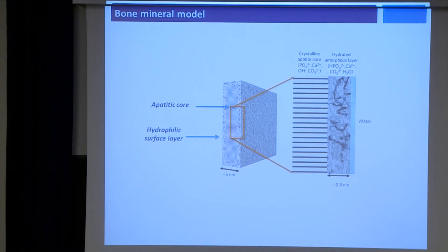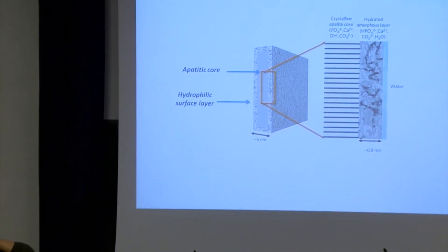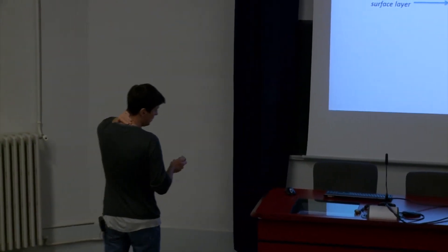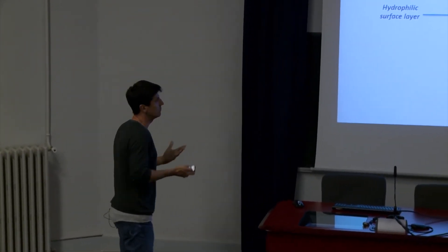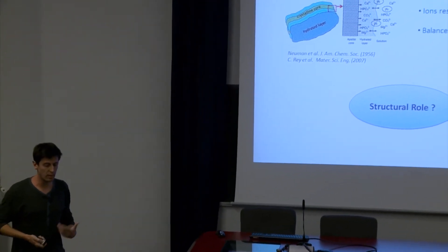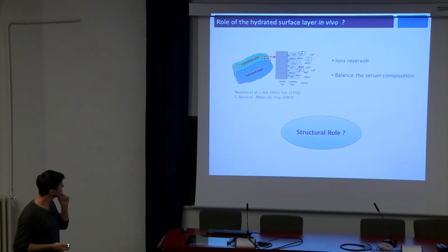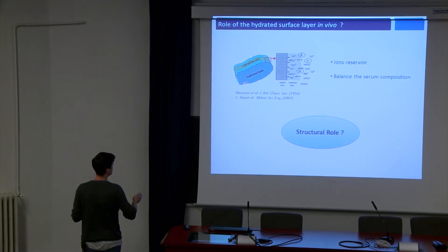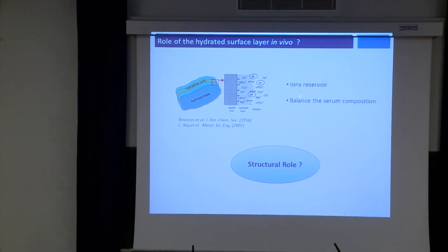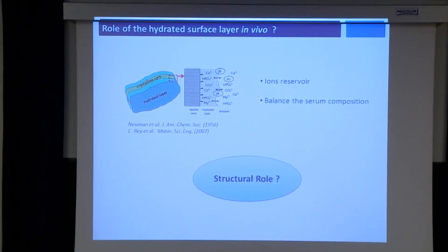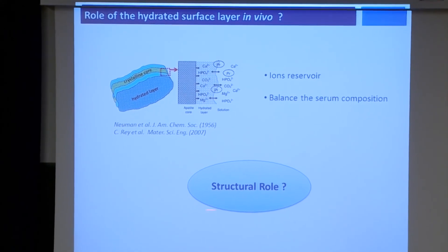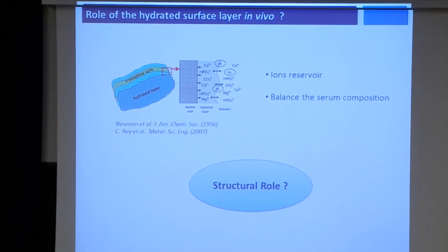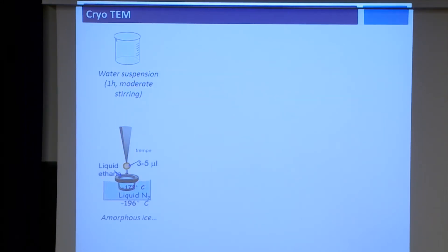At that point, we had to think about a putative role in vivo. What could be the interest of having such a hydrated layer on top of the platelets? The hydrated layer acts as an ion reservoir and is able to balance the serum composition. But we also thought about a putative structural role. To check that, we turned to cryo-TEM experiments, trying to observe the behavior of the platelets in the presence of water.